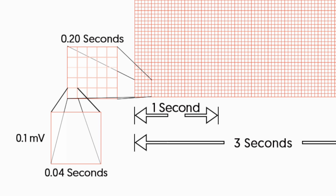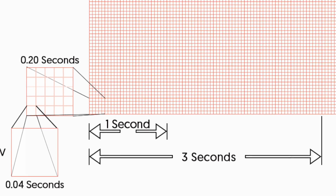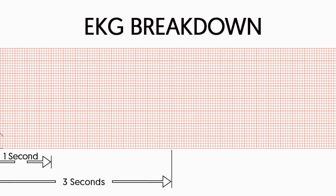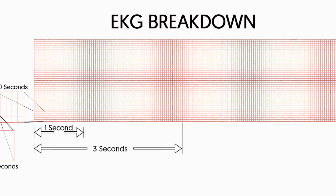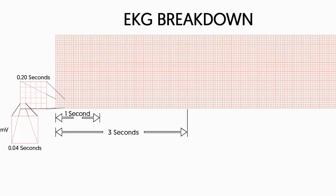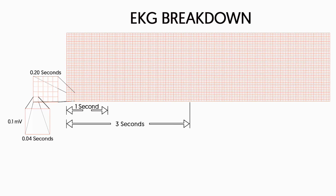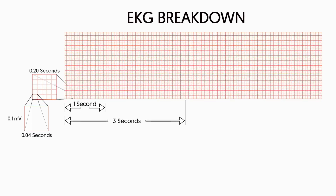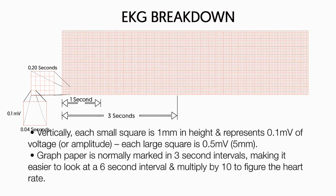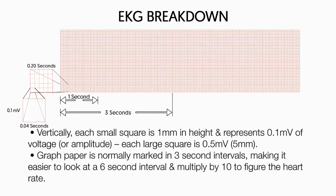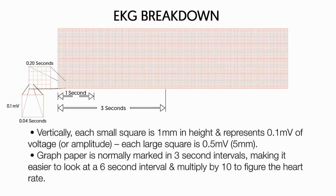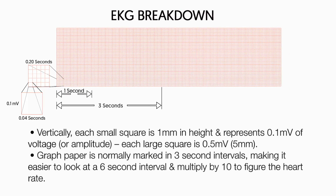EKG tracing is recorded on graph paper divided into millimeter squares. Each horizontal millimeter square represents 0.04 seconds, and each thick line or large square represents 0.2 seconds. Five large squares equals one second, and 300 large squares equals one minute. Vertically, each small square is one millimeter in height and represents 0.1 millivolts of voltage, or amplitude. Each large square is 0.5 millivolts, or five millimeters. Graph paper is normally marked in three-second intervals, making it easier to look at a six-second interval and multiply by 10 to figure the heart rate.